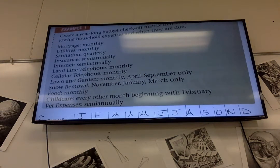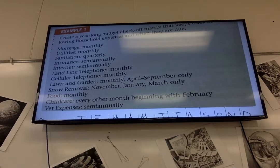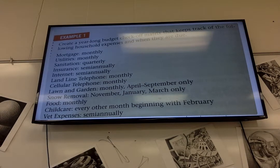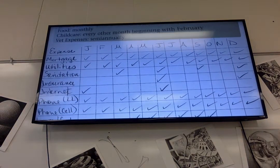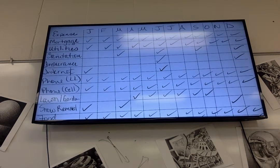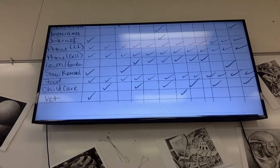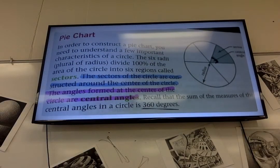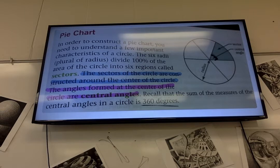Okay, so I forgot to record, so virtual students I'm sorry you might need to pause this. Here's a list of all the expenses per year and then we made a checklist that goes with all of those expenses and we put check marks when they were due. We just defined sectors and central angles in a pie chart and that a circle has 360 degrees, so you might need to pause that and write all that stuff down.